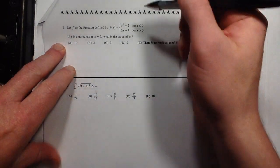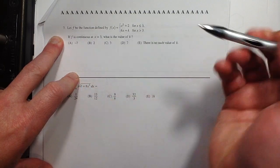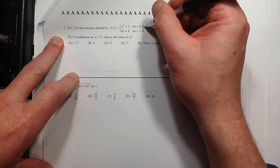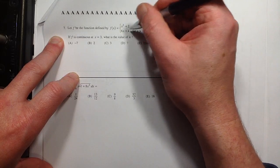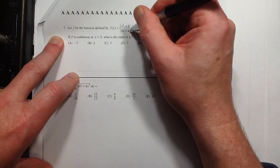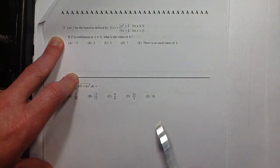Alright, this is 2014, starting with number 7. We've got a piecewise defined function here. Remember what this means: when you have x values less than or equal to 3, this is where you plug them in. If you have x values greater than 3, this is where you plug them in. If f is continuous at 3, what's the value of k?